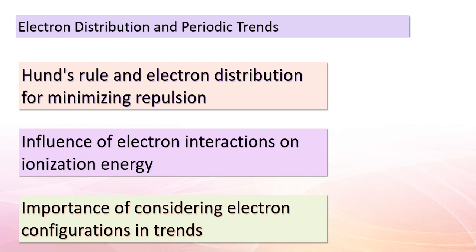Hund's rule plays a crucial role in electron distribution, guiding us to minimize electron-electron repulsion. This rule ensures that electrons within the same orbital have parallel spins, maximizing stability. The intricate dance of these electrons significantly impacts ionization energy and other elemental properties. When we discuss trends, it's essential to consider the electron configurations of elements, as the arrangement of electrons within an atom serves as a key determinant in explaining these patterns.